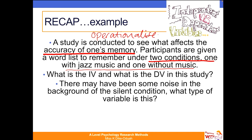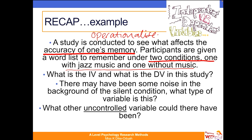The silent condition must be completely silent. There may have been some noise in the background of the silent condition — we know what type of variable this is from the previous slide: a confounding variable, also known as an extraneous variable. Thinking outside the box with this scenario, if noise could be a potential confounding variable, what other confounding variables might there be in this study?